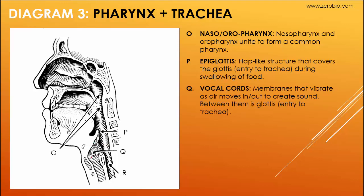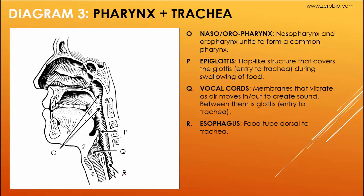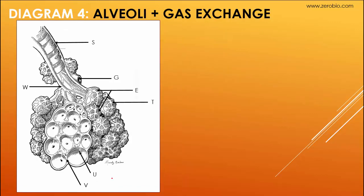The vocal cords are located right here — tissue on either side with a hole in between. When air is forced through the glottis, these tissues vibrate like guitar strings, which causes your voice. Tightening of these cords modulates the pitch of the sound. The esophagus is the more dorsal tube behind the trachea, which is more ventral; this dorsal tube carries food down to the stomach.